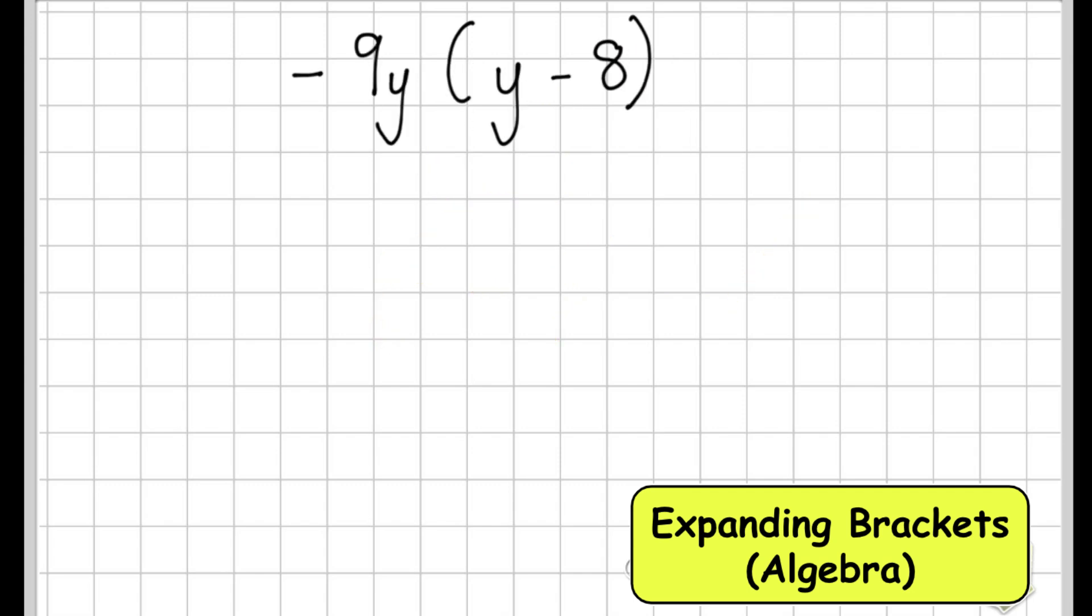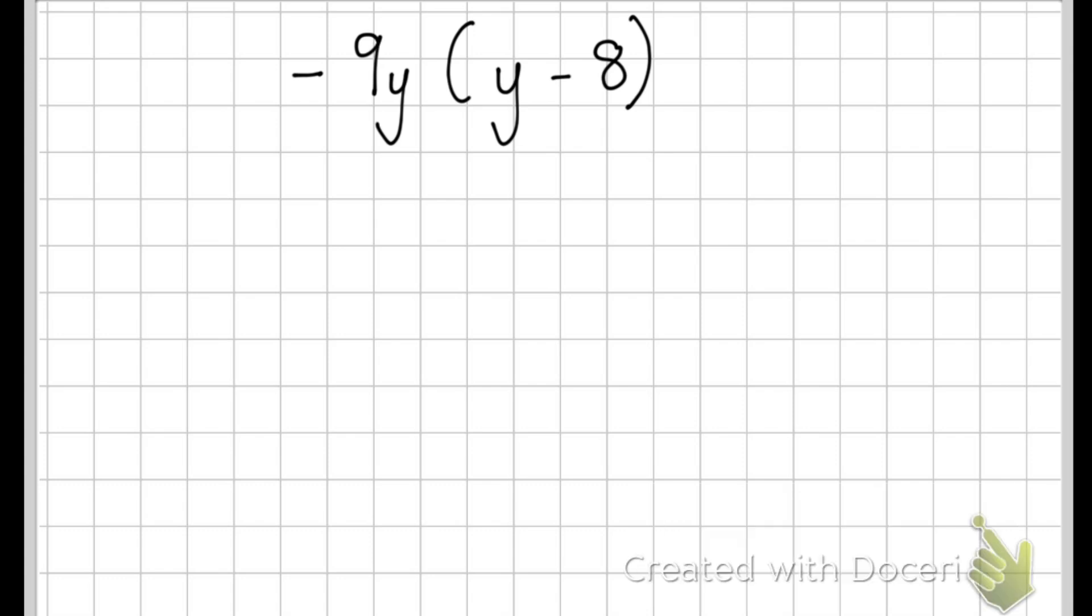So now we're going to be getting a little more difficult as we have a negative number but not to worry. I know that if you multiply two negative numbers together it makes a positive but we'll see about that in a little bit. Let's do -9y multiplied by y. That would give me -9y².